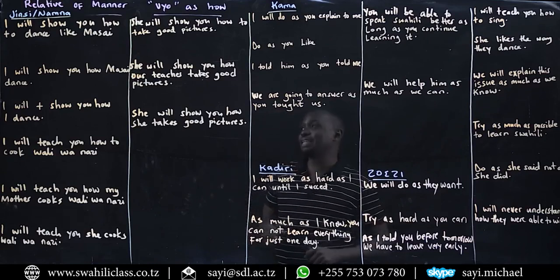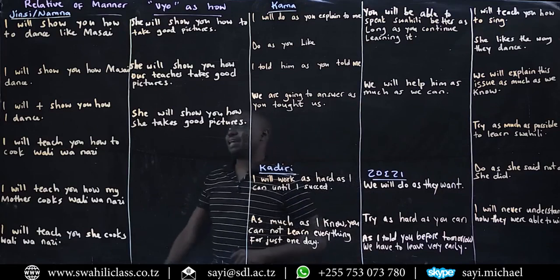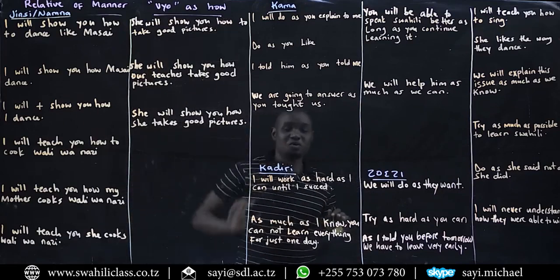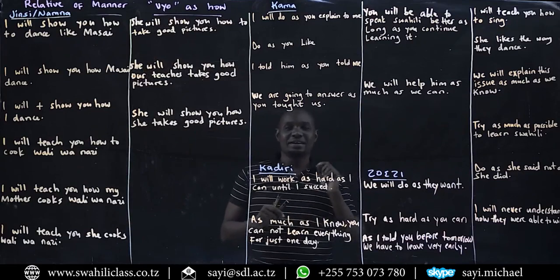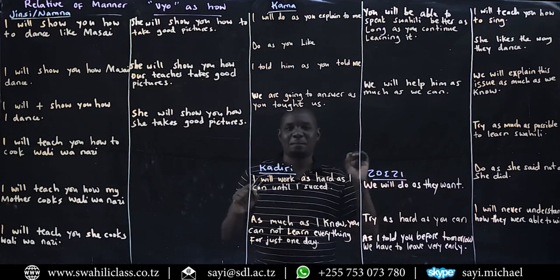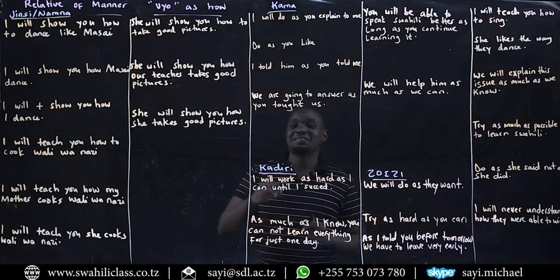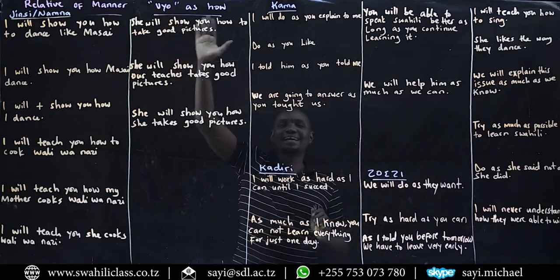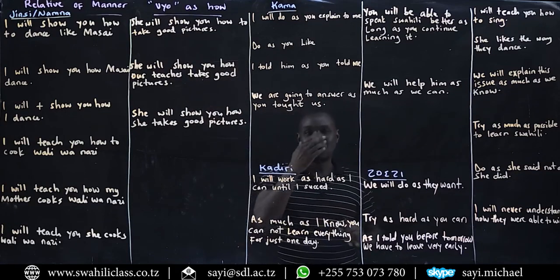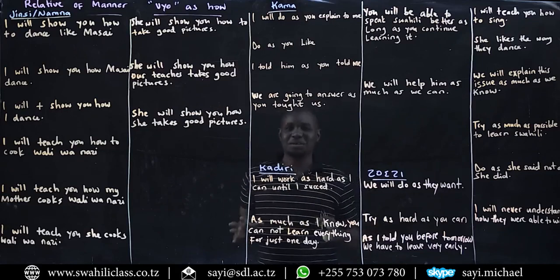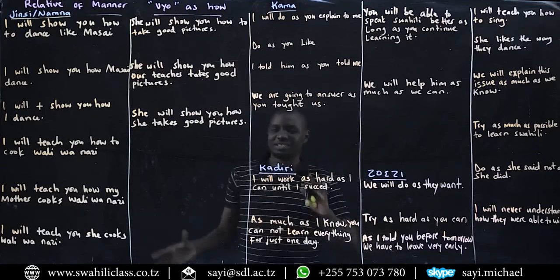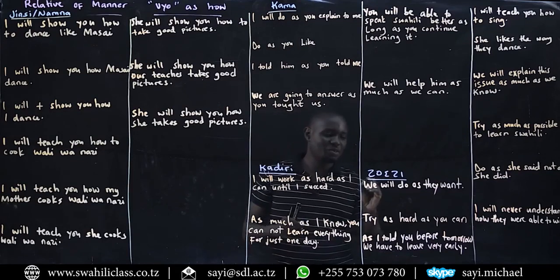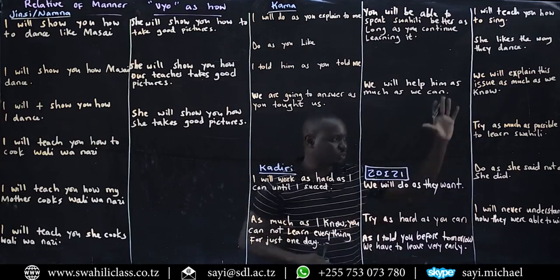Nini tutajifunza katika Swahili? Tutajifunza relative of manner — vio, as how. You remember we learned relative of time — po, as when? Today we are going to learn vio, not po, vio as how. We will have a lot of examples and also we are going to have zoezi. You'll be able to do the exercises yourself and play the video to check your answers.